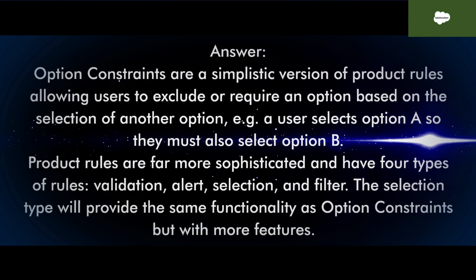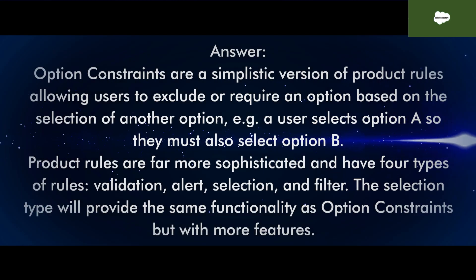Option constraints are a simplistic version of product rules, allowing users to exclude or require an option based on the selection of another option — for example, a user selects option A so they must also select option B. Product rules are far more sophisticated and have four types: validation, alert, selection, and filter. The selection type will provide the same functionality as option constraints but with more features.